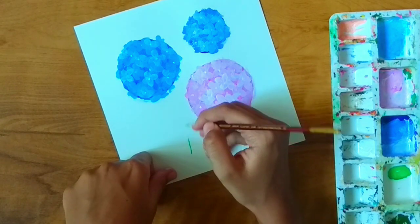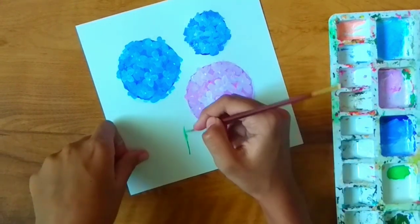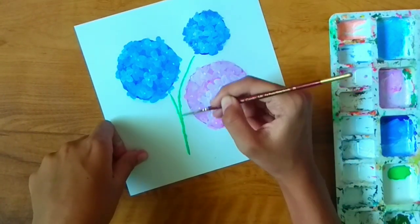And by using green, you can make the stem and leaves and then it will be ready.